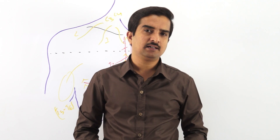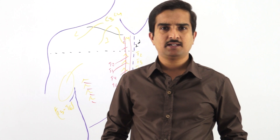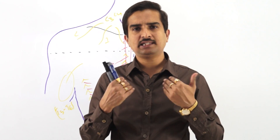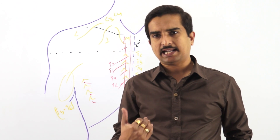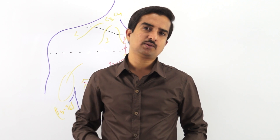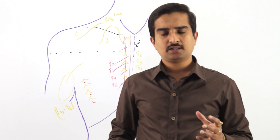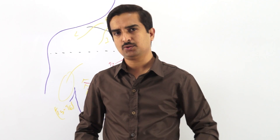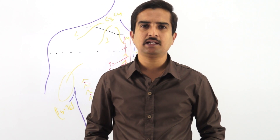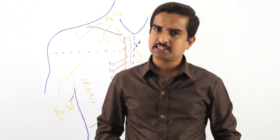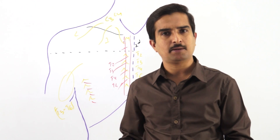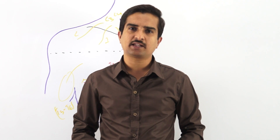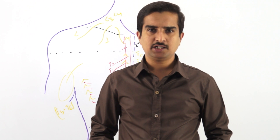The platysma is mainly innervated by the facial nerve. When the angle of the mouth is pulled downward, this muscle contracts, producing visible wrinkles over the neck. Therefore, wrinkles over the neck are mainly due to contraction of the platysma. When the facial nerve is paralyzed, the platysma becomes paralyzed and you cannot see wrinkles over the neck when the angle of the mouth is pulled downwards.